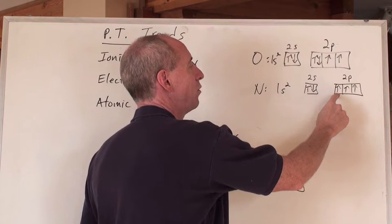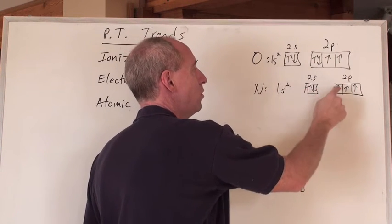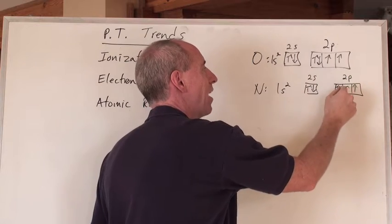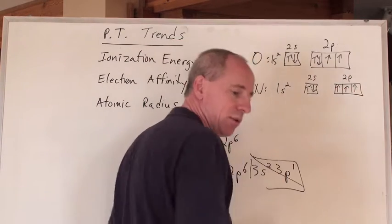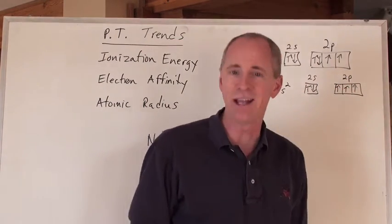But nitrogen says, hey man, I'm 2p3. See? 1s2, 2s2, 2p3. And if you have to actually give me my first double occupancy electron here, I don't like it.